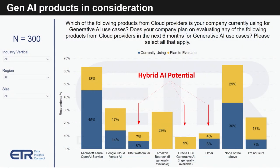Let's review how IT decision makers are thinking about which vendors of large language models they're adopting today for Gen AI and how they're thinking about future adoption and partnerships. This data from a recent ETR drill-down asks customers which products are currently in use for Gen AI and which are planned for evaluation. This is part of a cloud survey, so it's biased toward cloud, but that's where the action is today for the most part.